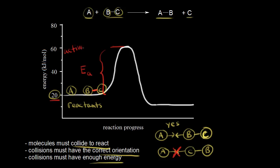The activation energy is the minimum amount of energy required to initiate a chemical reaction. For this reaction, we need to get to 60 kilojoules per mole. That point on the diagram is at 60 kilojoules per mole, and we're starting out with 20, so 60 minus 20 equals 40. So the activation energy EA for this reaction, according to our diagram, is positive 40 kilojoules per mole. The energy of the collision must be greater than or equal to the activation energy.